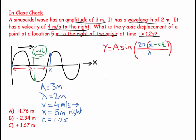So now here's the more mundane thing, which is let's put some numbers in. So y is equal to amplitude is 3, sine 2 pi, x. Let's have a look. X was 5 meters to the right, minus v. V is 4 meters per second, times t, 1.2, all over lambda. Lambda was 2.